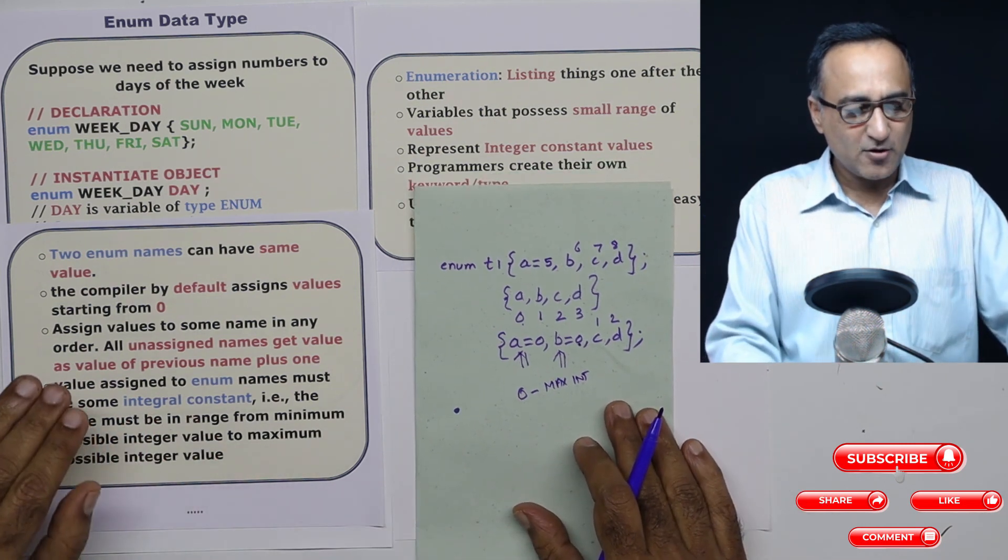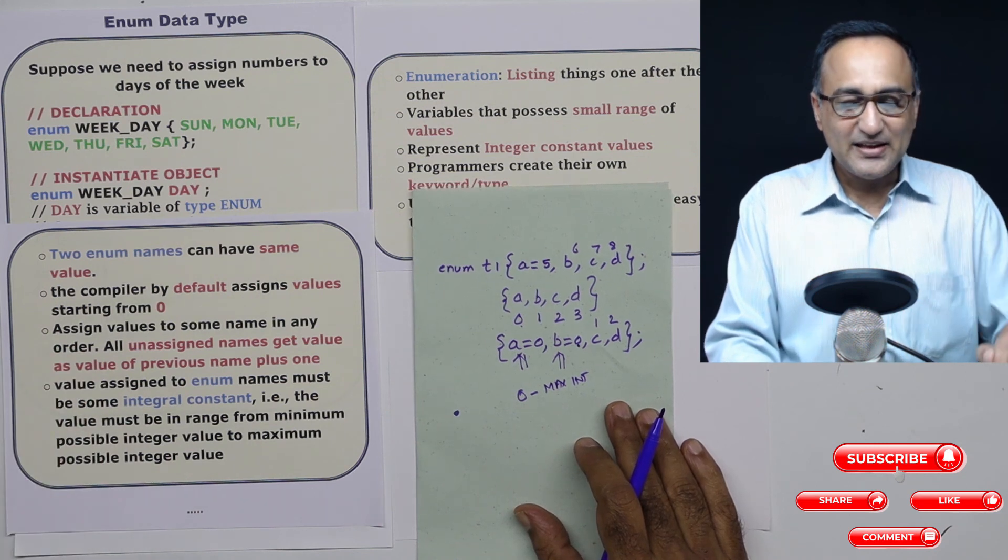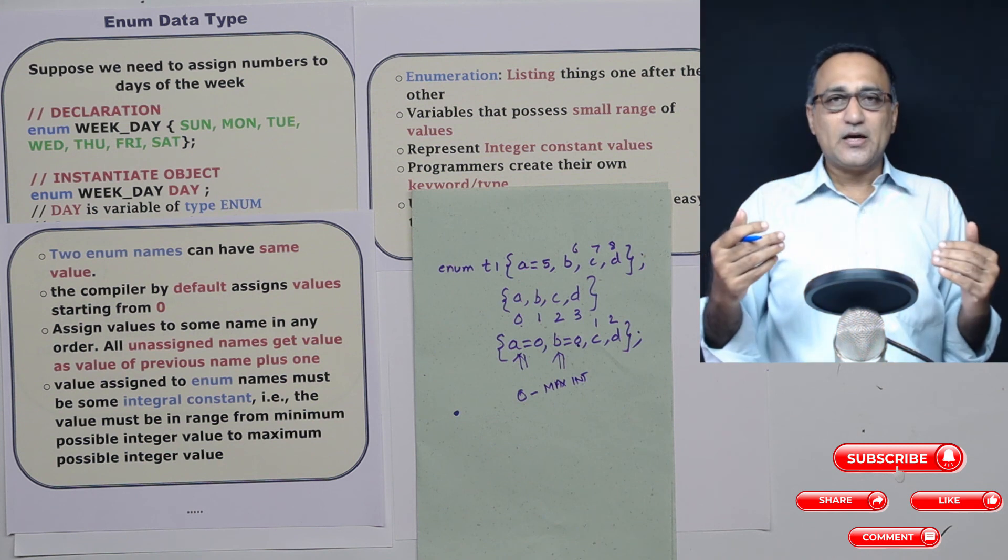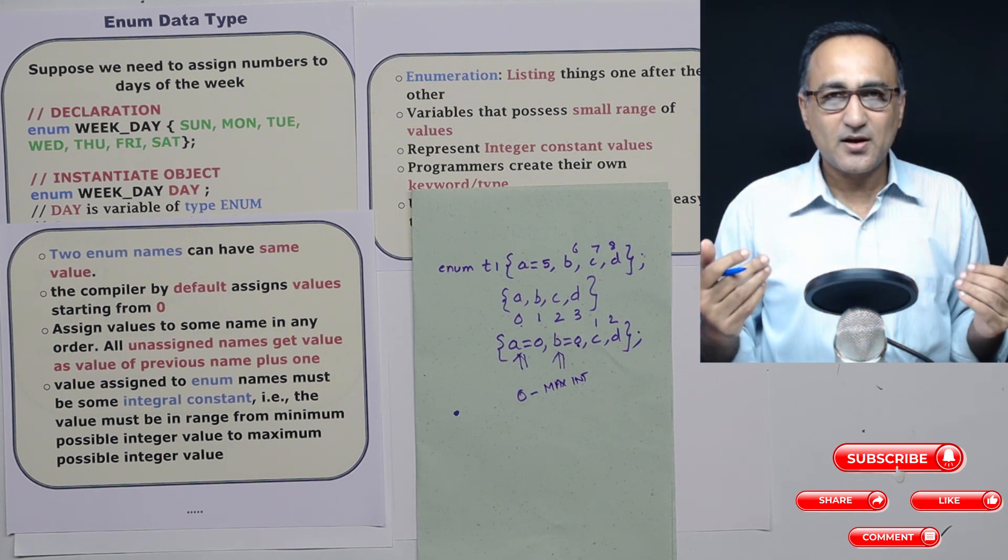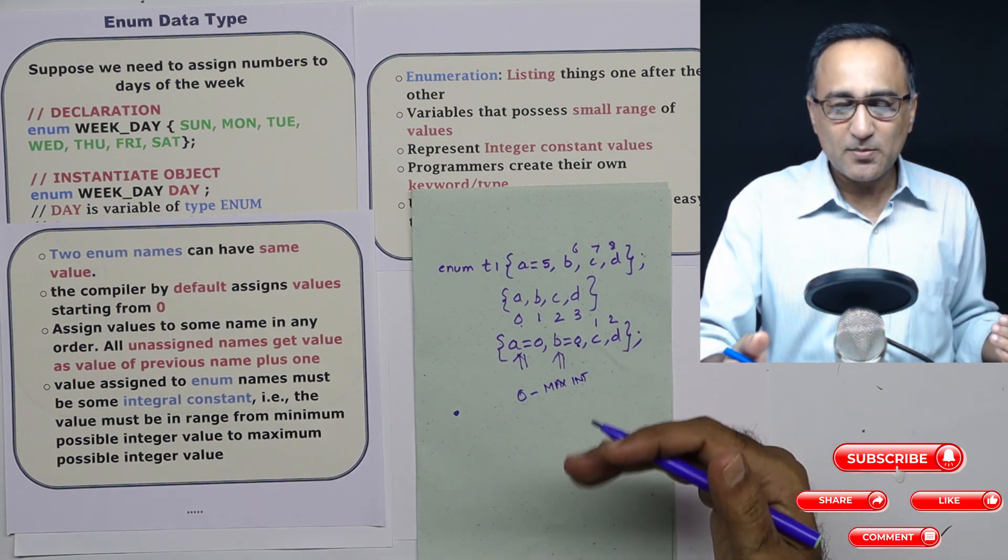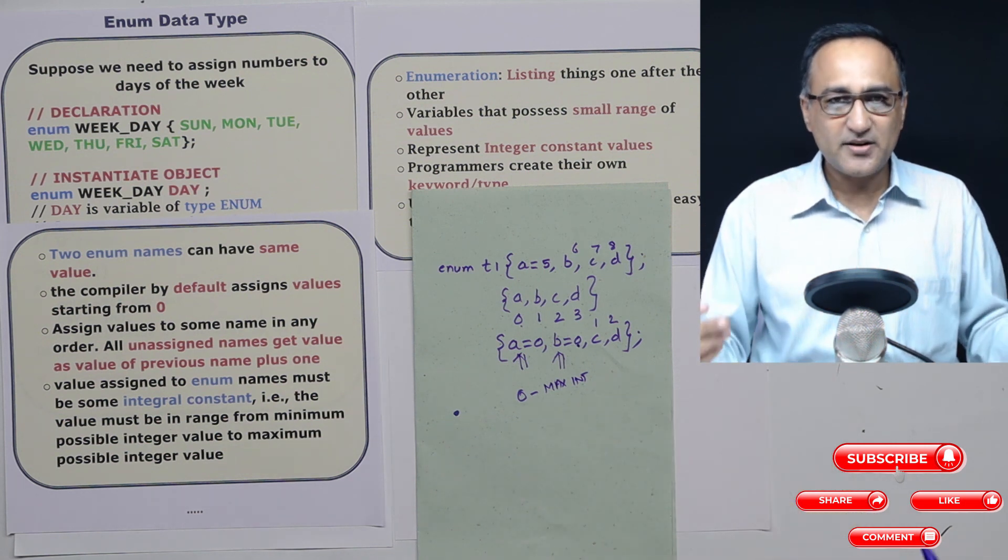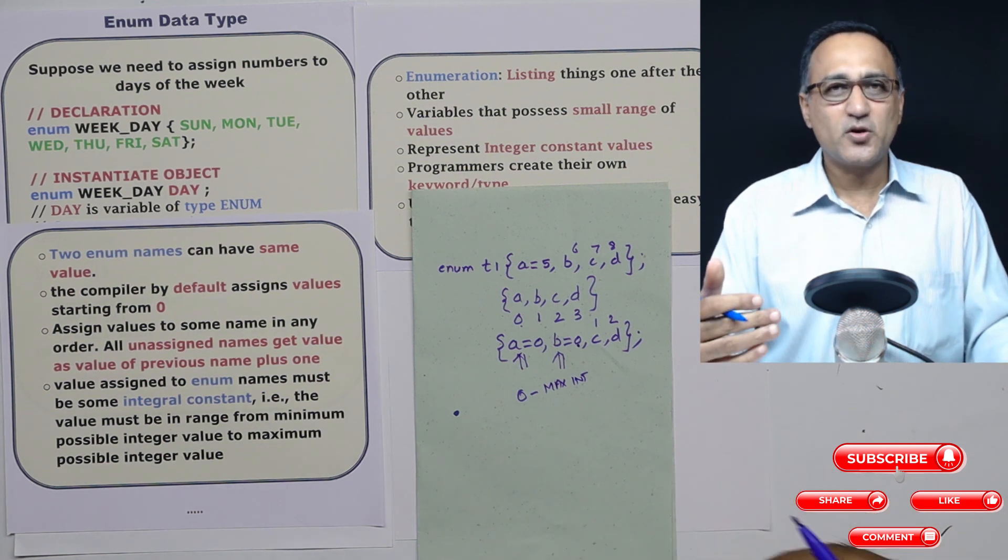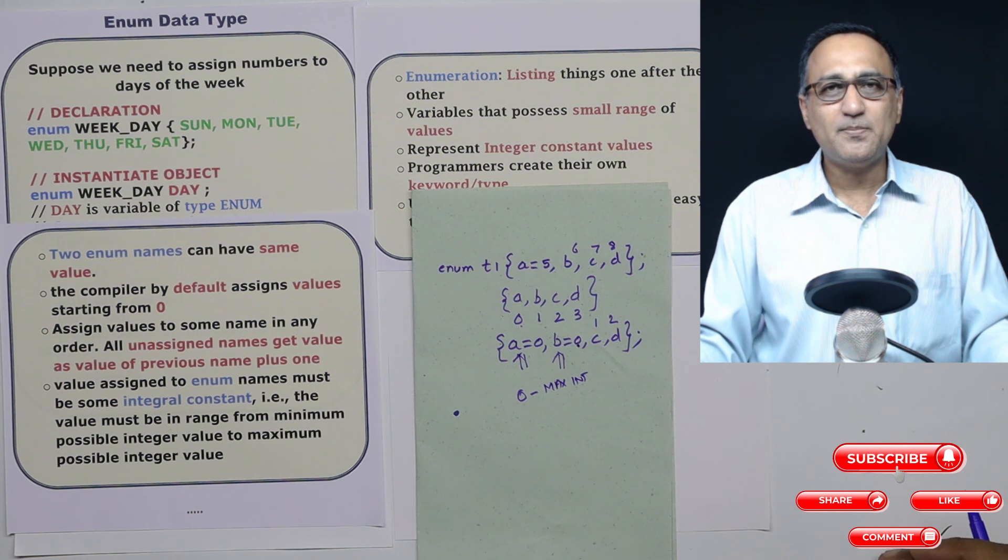So this should give you a fair idea of what exactly is an enum type of variable. As we try to do a little problems as we go towards mastering concepts for towards campus placement, we will be doing a number of problems on enum and you will understand it much better. But if you run through this video more than once, I am sure you will understand everything about the enum data type.